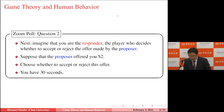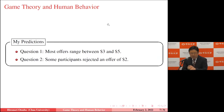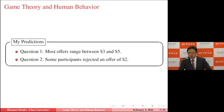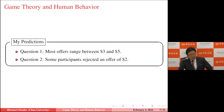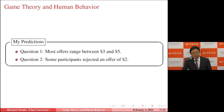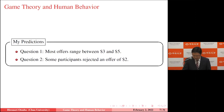By the way, I prepared my predictions before this event. For question one, I predicted most offers would range between $3 and $5, but in reality I saw a wider range of offers. For question two, I predicted some participants would reject an offer of $2. About 30-something percent actually chose to reject. I think I did a good job.